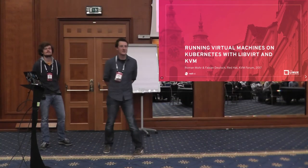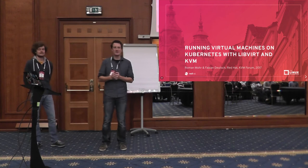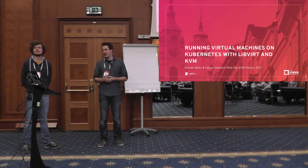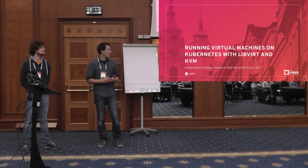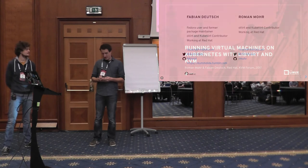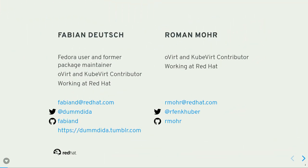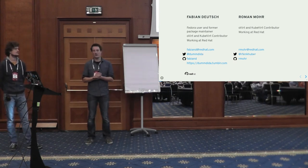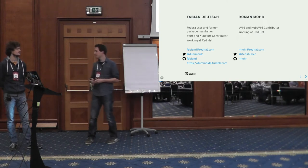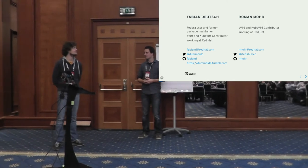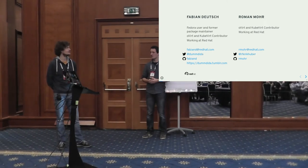Good morning, nice to see all of you. We'd like to start speaking about our topic, which is running virtual machines on Kubernetes with LibVirt and KVM. My name is Fabian Deutsch. I started off with Fedora and a few other Linux distributions, and I'm now working for Red Hat on virtualization — in oVirt and now in KubeVirt. And Roman was working for Red Hat, contributing to many open source projects, working on oVirt, and now switching over to KubeVirt to bring virtual machines to Kubernetes.